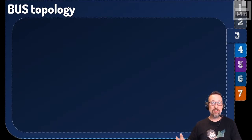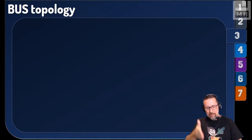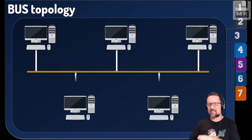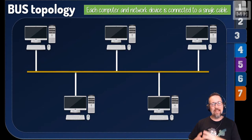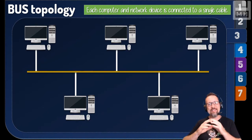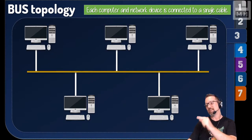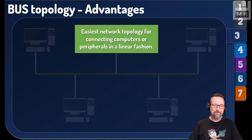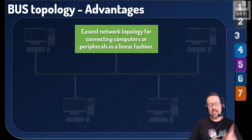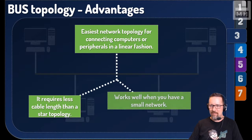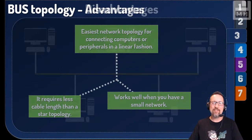Next is bus topology. Think of a bus going along a route, stopping at certain points — there's a main bus route with stop points along the way. Every computer and network device connects via a single cable or pathway. Advantages: it's the easiest network to put together since everything is in a linear fashion, requires less cable than a star topology, and works very well for small networks.